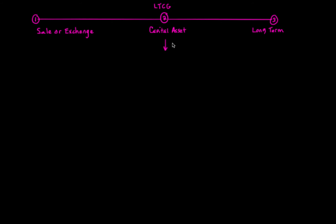The actual tax law starts off by saying that all assets are capital assets unless otherwise specified. The code defines it by saying unless otherwise specified, an asset is a capital asset. We're going to talk about six different ways or types of assets that are not considered capital assets because they're specifically carved out. That's how the code goes about this — it talks about which assets are carved out. So unless otherwise specified, your asset will be a capital asset.